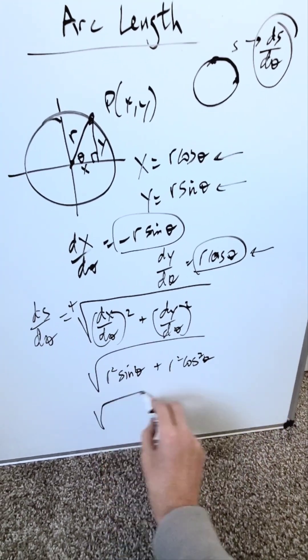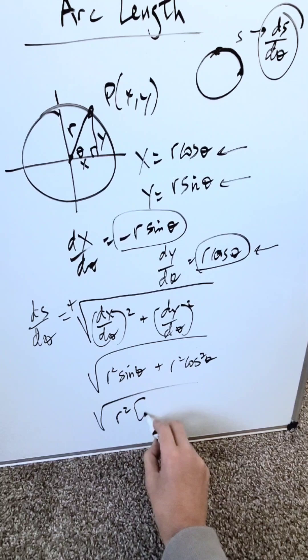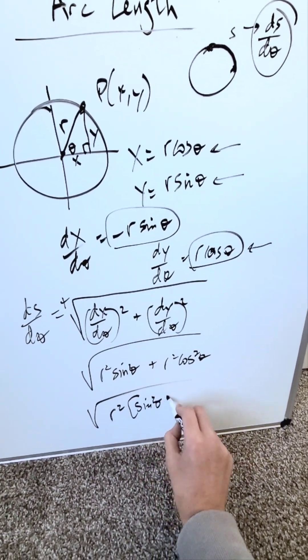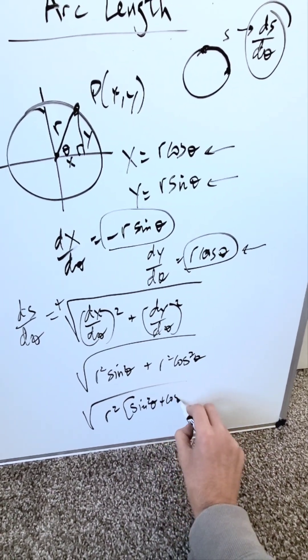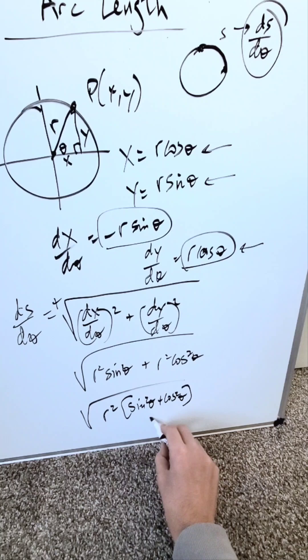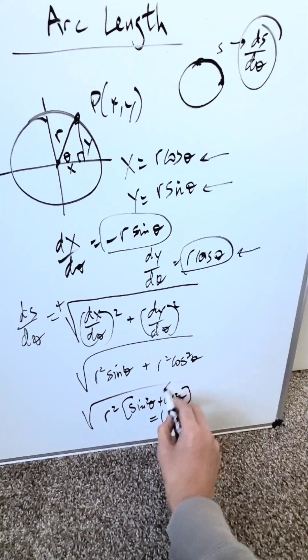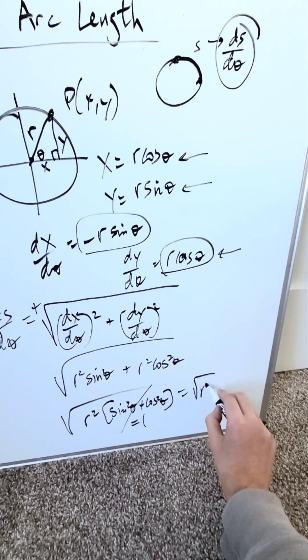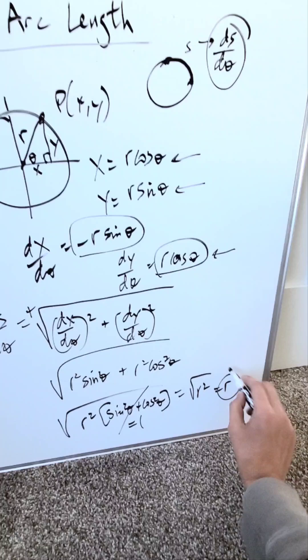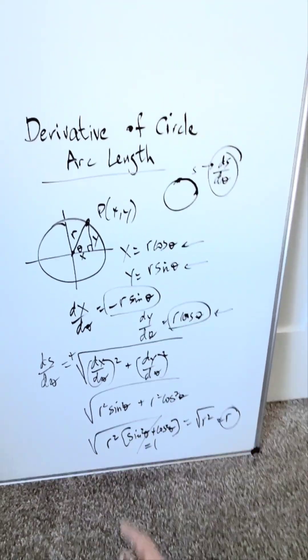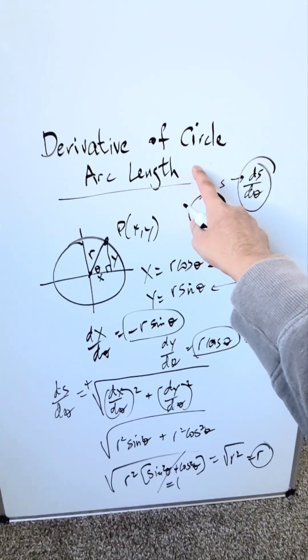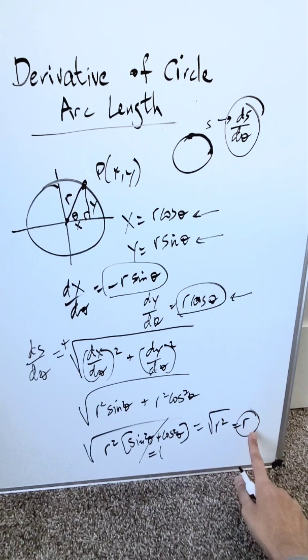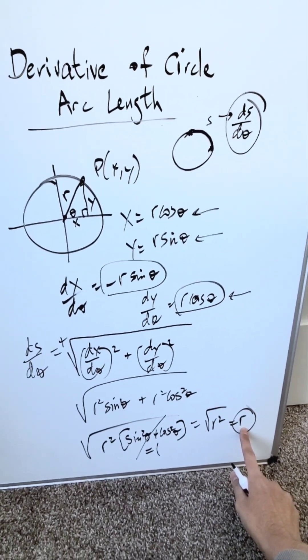I can isolate r² and then have sin² θ + cos² θ. By trigonometric identity, this equals 1. The only thing in the square root is r², so the result is r. If someone asks you what is the rate at which arc length changes for a circle, it equals exactly the radius of that circle. And that is the correct answer.